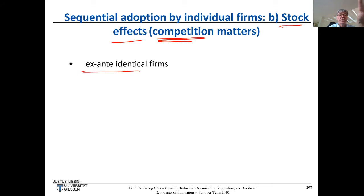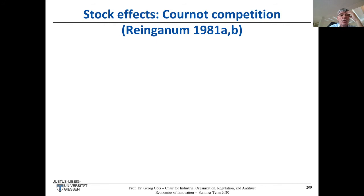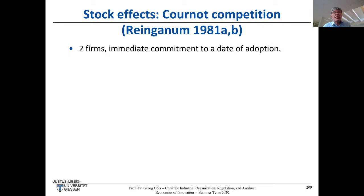Reinganum shows that if the gains from adoption depend on the stock of firms already using the new technology, you will get diffusion. I spent half of my PhD dissertation on these topics. We look at stock effects with Cournot competition — it's pretty similar to what we previously had, so I can move through it quickly.